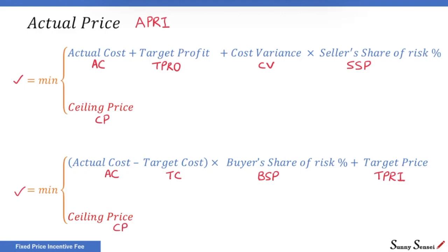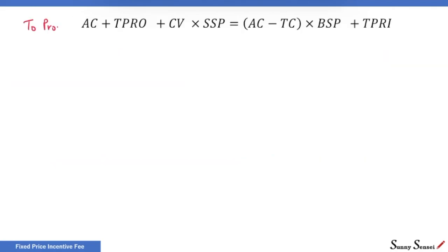The only difference between these two formulas is the first option. We will prove that these formulas are equivalent. Let's start with the left hand side of this equation. Target profit equals target price minus target cost. We also know that cost variance equals target cost minus actual cost multiplied by seller's share of risk in percent.